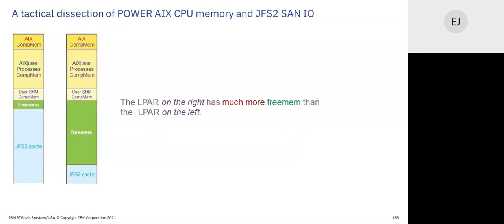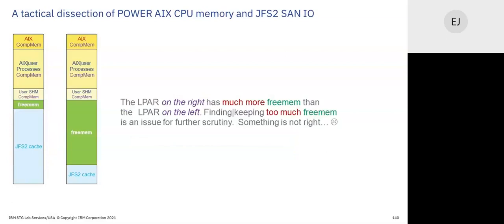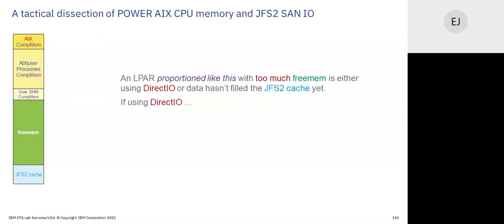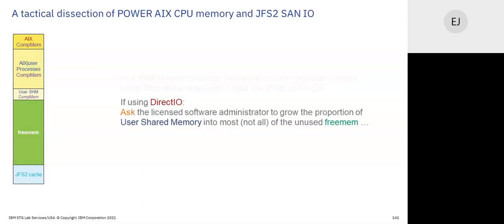LPAR on the right: too much free memory — 55 percent memory free. LPAR on the left: about right, usually the traditional cache proportion. Something is wrong when you have that much free memory. If you're proportioned like that with all that free memory and you're using direct I/O, you've got a problem. Ask the software administrator to grow the shared memory bigger into the unused free memory.